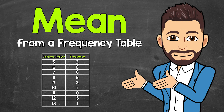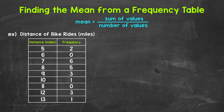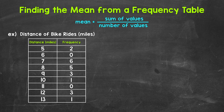Welcome to Math with Mr. J. In this video, I'm going to cover how to find the mean from a frequency table. We find the mean by taking the sum of all of the values and then dividing that sum by the number of values we have. So add everything up and then divide by how many values there are.